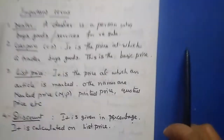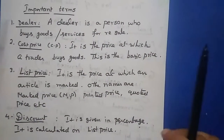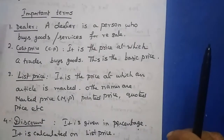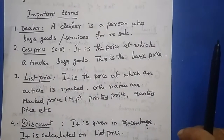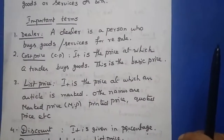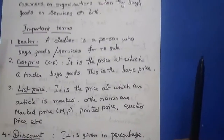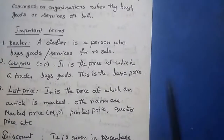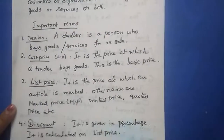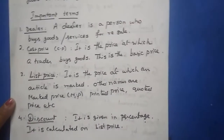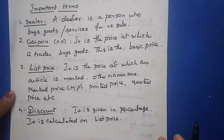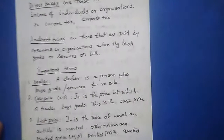The third term is list price. After buying, the businessman or shopkeeper will increase the price. It is the price at which an article is marked. Other names are marked price, printed price, and quoted price. It is more than the cost price.